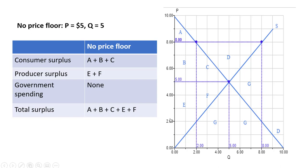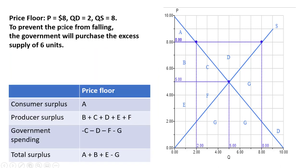Now we're going to institute a price floor of $8. You'll notice that at $8 consumers will buy two units, but sellers want to sell eight units.